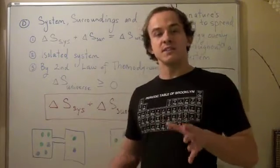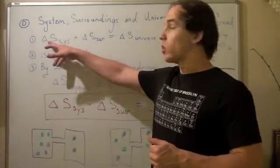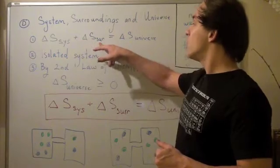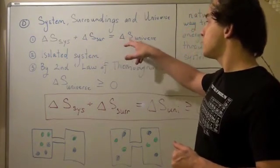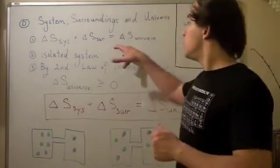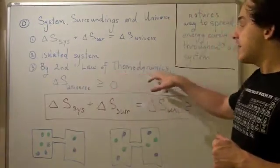According to the conservation of energy, delta S, or the change in entropy of the system, plus the change in entropy of the surrounding, will give you the change in entropy of the universe. Remember, the universe is an isolated system, and according to the second law of thermodynamics,